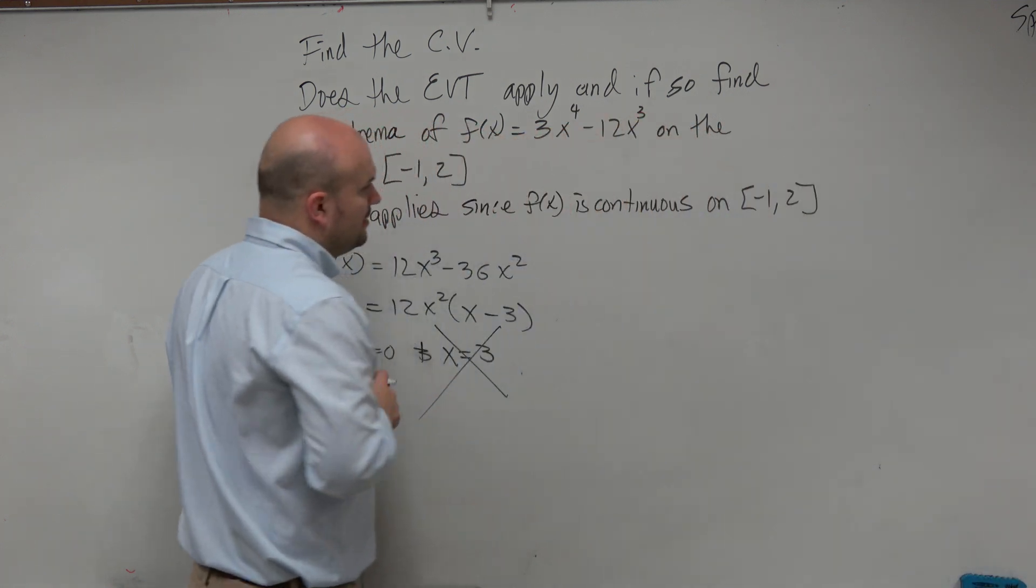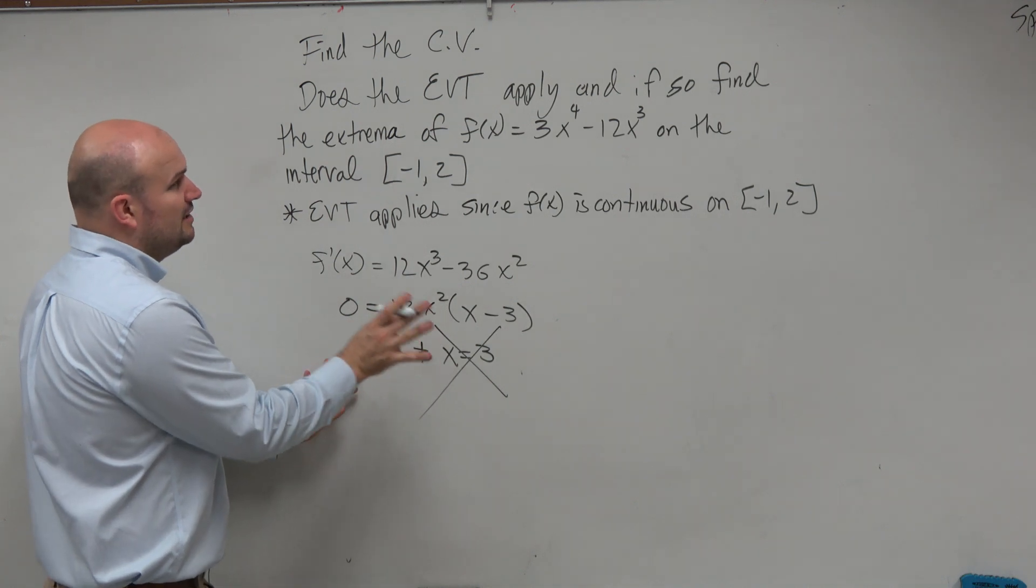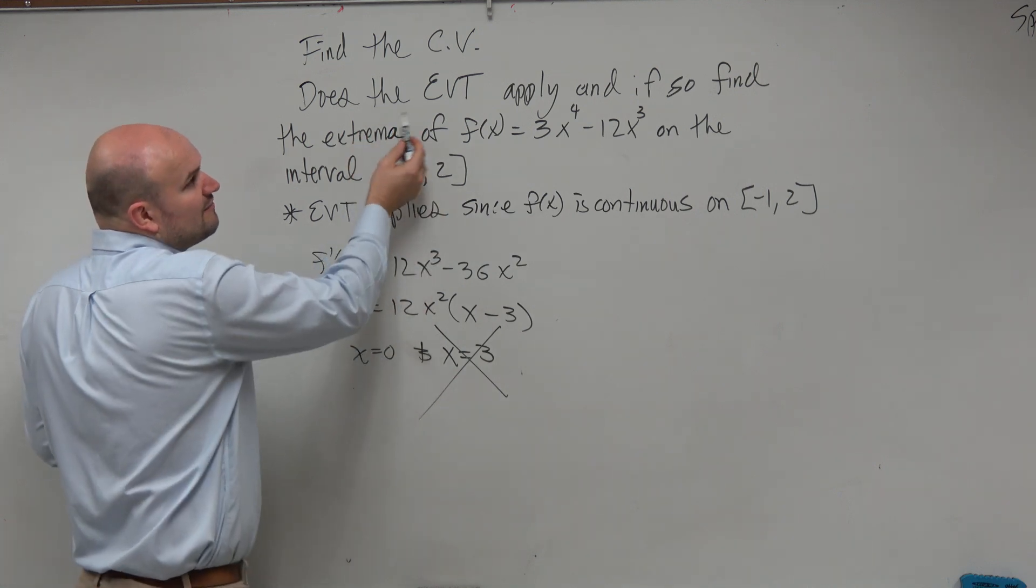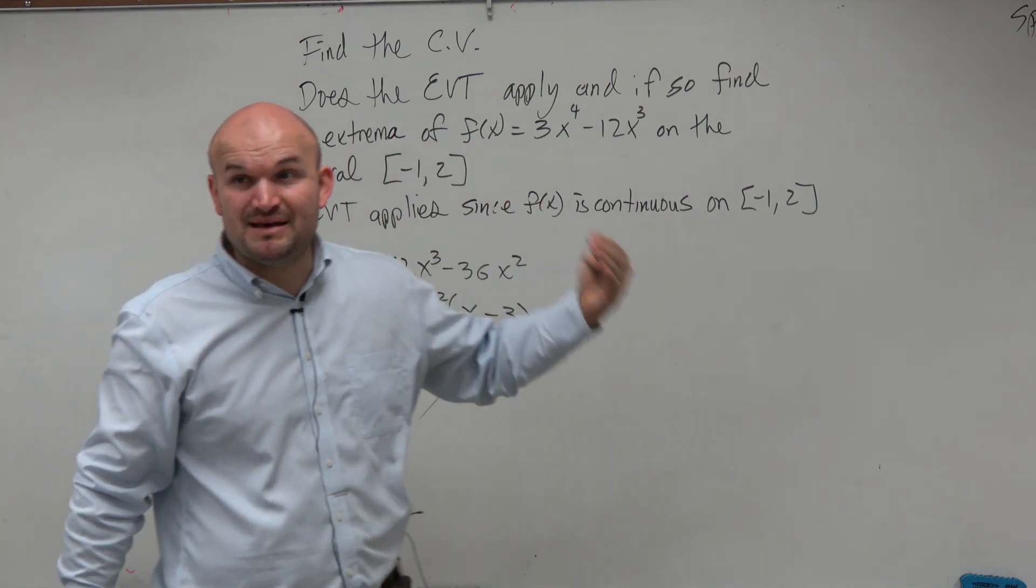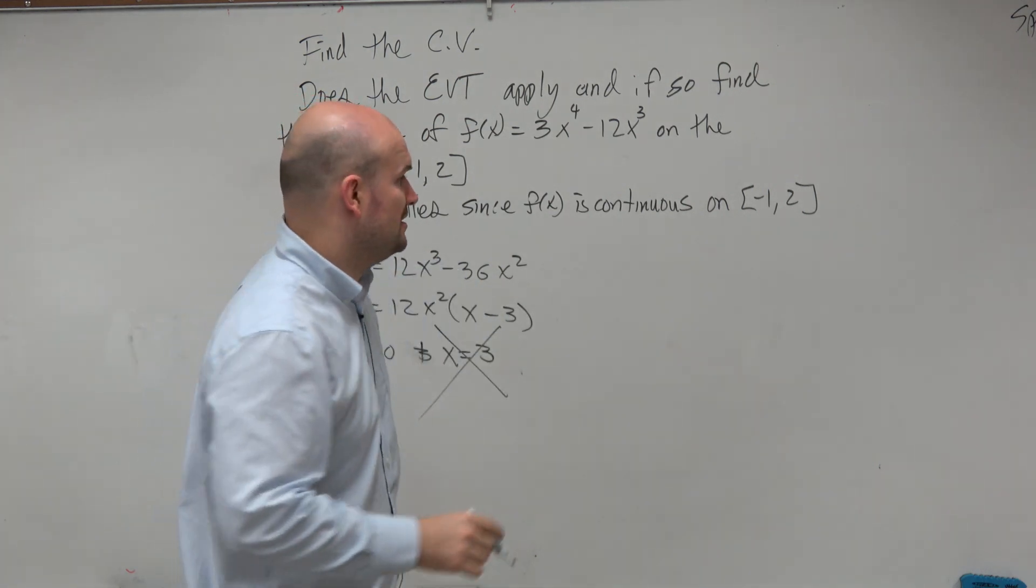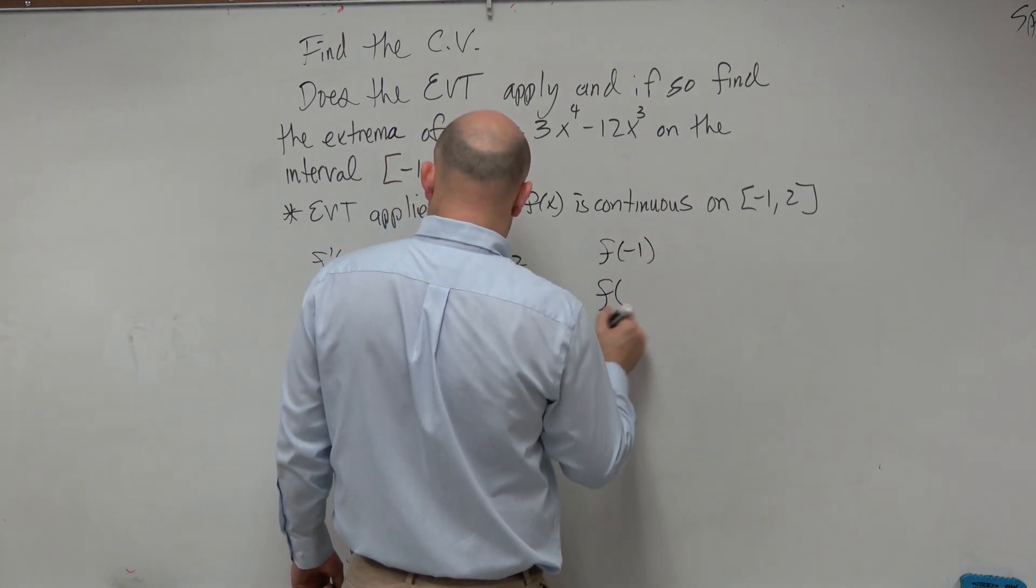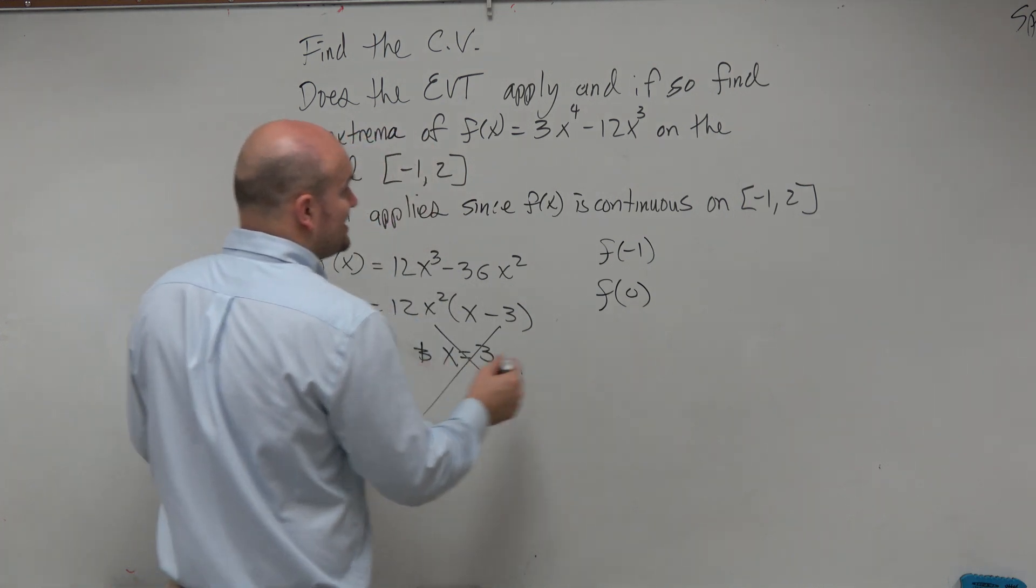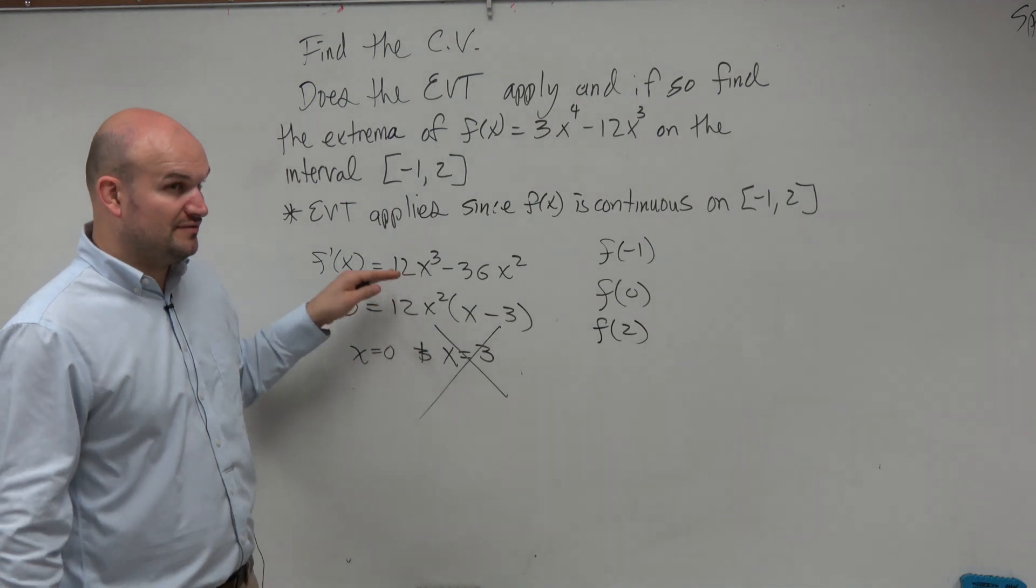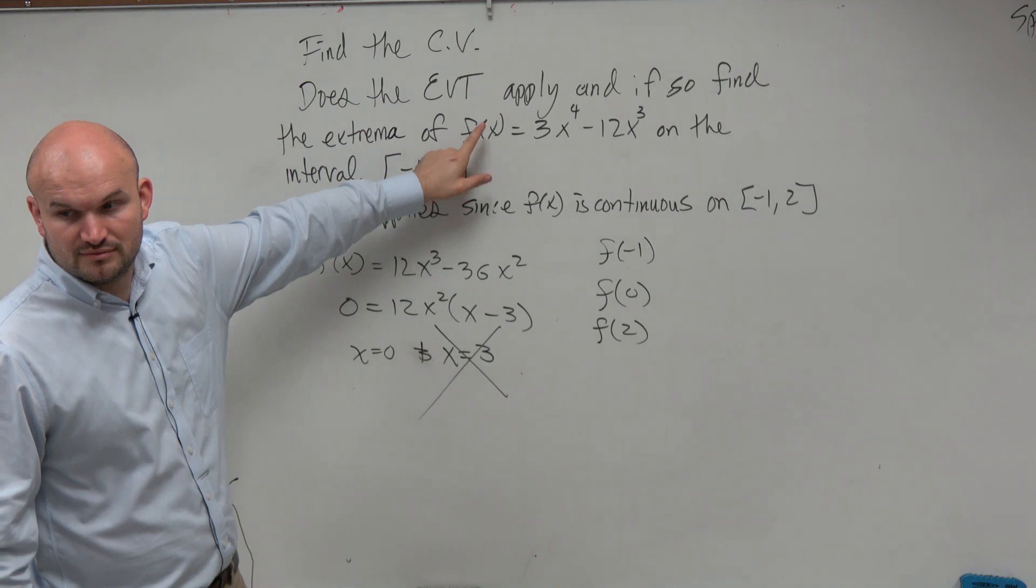So now if we need to test, we can only test our endpoints here. Now again, but what is the question saying? The question is not saying find the critical values. That's what I asked last time. The question is saying find the extrema. That means we need to find the max and the min. So it can only live at the endpoints or at the critical values. So let's go ahead and figure out f(-1), f(0), and f(2). Now again, we're not plugging them into our derivative. We just use the derivative to find the critical values. We're going back into our function. So we're plugging them into our function.